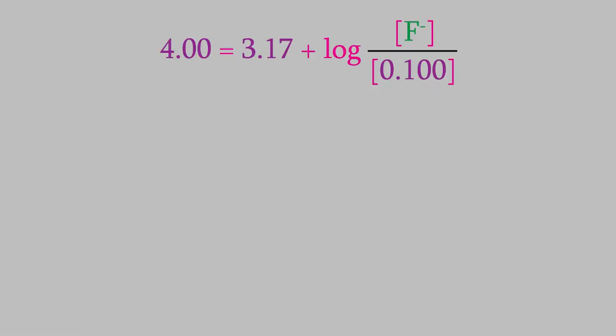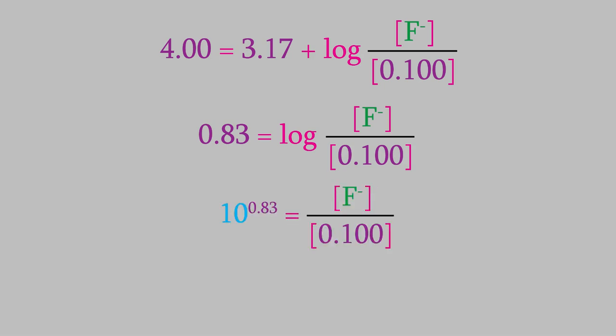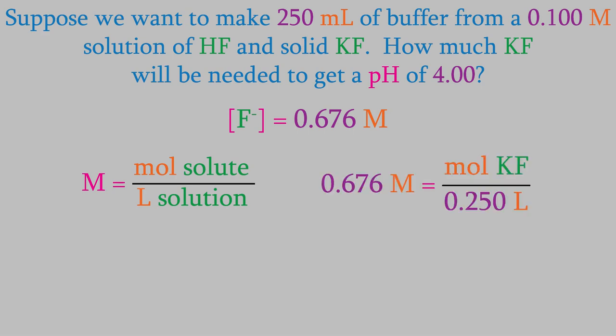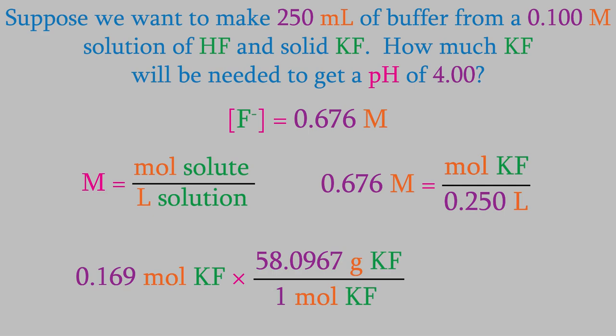The concentration of fluoride is what we're looking for, and the HF concentration is 0.100. To solve the equation, we'll subtract 3.17 from both sides, which gives us 0.83 on the left. Now, we'll get rid of the logarithm by making the left side the exponent on 10. That gives us 6.76 on the left. Now, we solve for the fluoride concentration, and get 0.676 molar. To find the mass of potassium fluoride we need, we'll just use the definition of molarity. We have 250 milliliters of solution, which is 0.250 liters. So, that means we need 0.169 moles of potassium fluoride. The periodic table tells us that potassium fluoride weighs 58.0967 grams per mole. So, that means we'll need 9.82 grams to make our buffer.